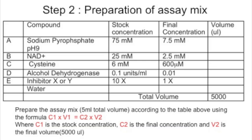You will then need to prepare the assay mix. You have a list of all the compounds you need to put in, and you will be given the stock concentration. You will have to calculate what volume to add to a total of five ml to reach the final concentrations indicated. To do so, use the C1V1 = C2V2 equation to calculate how much you need of each compound, then make up the rest of the volume with water.